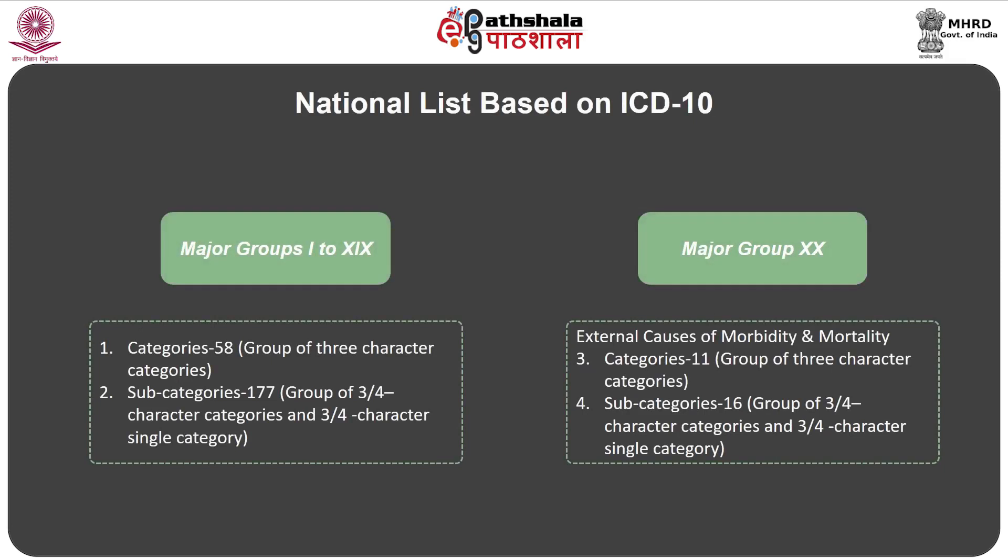National List based on ICD-10. The list has Major Groups 1 to 19, with 58 categories (groups of 3-character categories) and 177 subcategories (groups of 3–4 character categories and 3–4 character single categories). Major Group 20 covers External Causes of Morbidity and Mortality, with 11 categories and 16 subcategories.